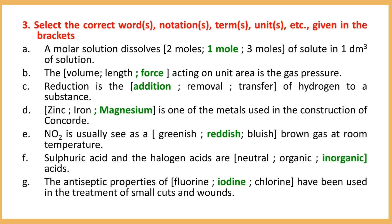Number D: Magnesium is one of the metals used in the construction of Concorde. Number E: NO₂ is usually seen as a reddish-brown gas at room temperature.